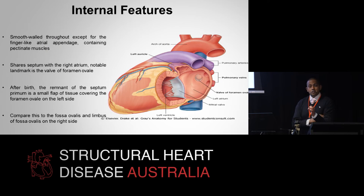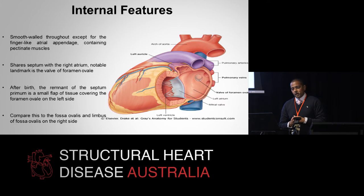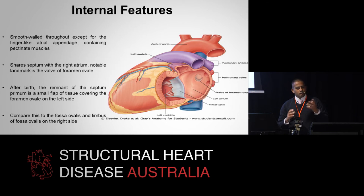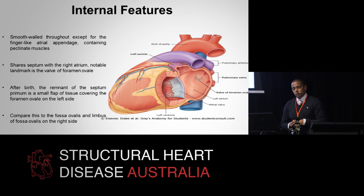When we talk about internal features, the left atrium is really smooth-walled throughout, except for the finger-like appendage which contains pectinate muscles. Compare that to the right atrium, which has an extensive network of pectinate muscles.